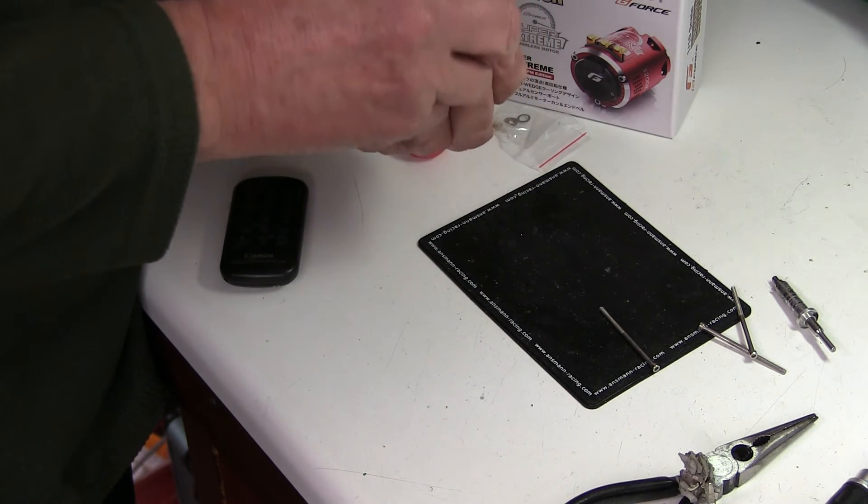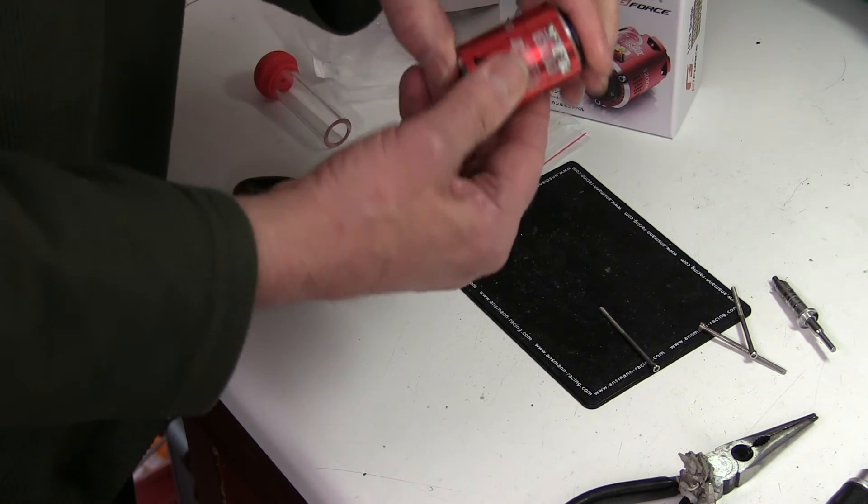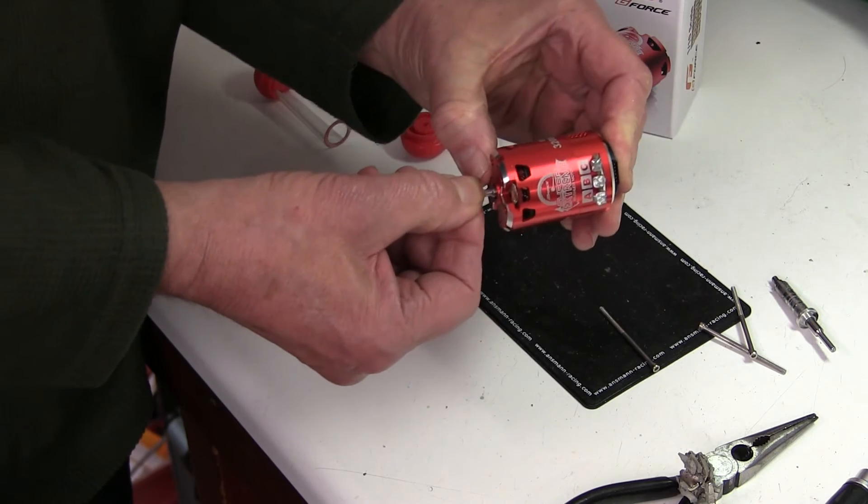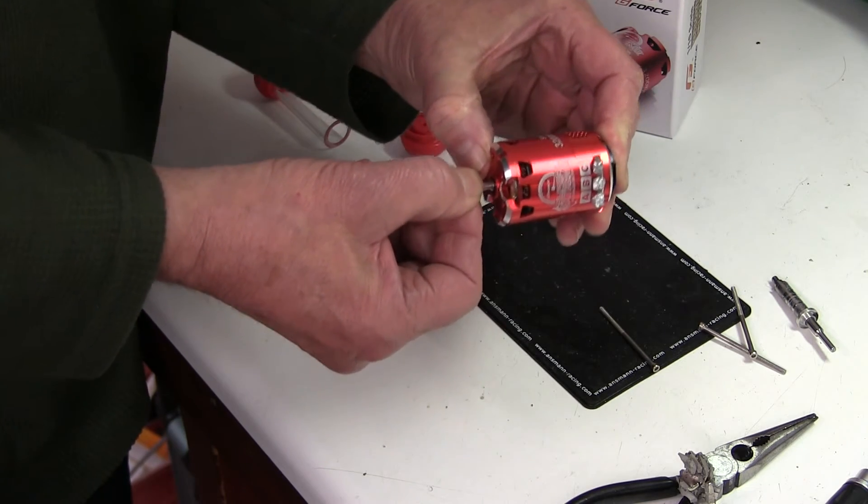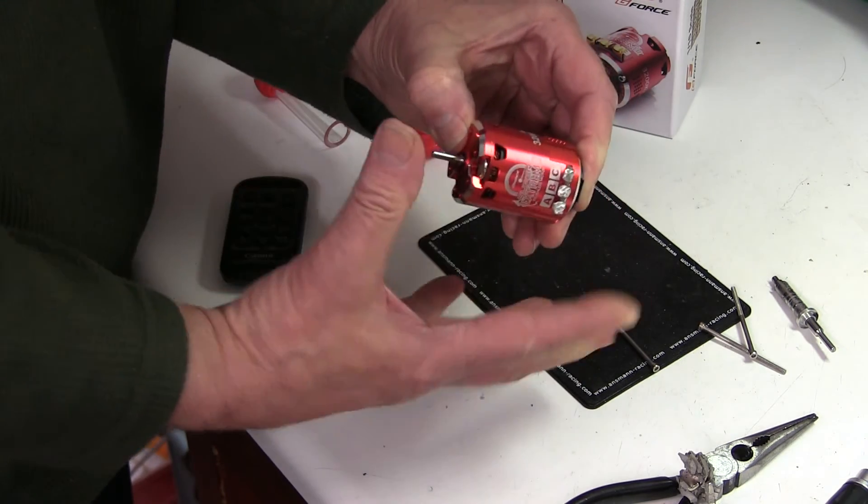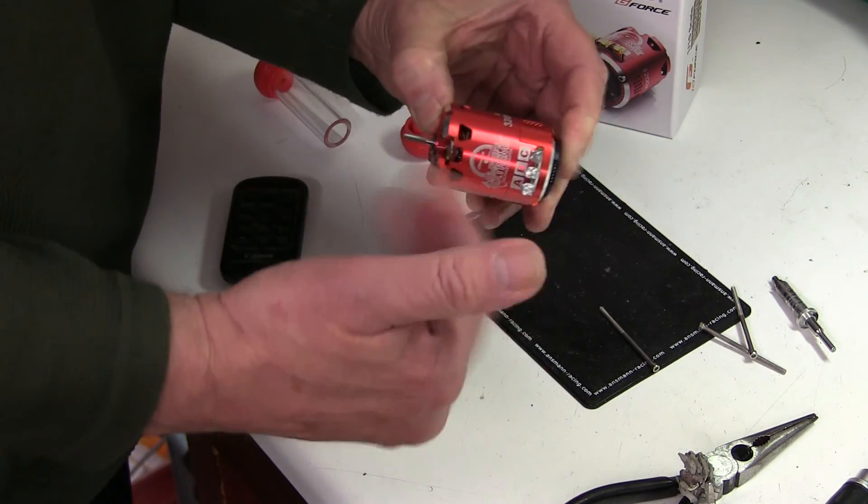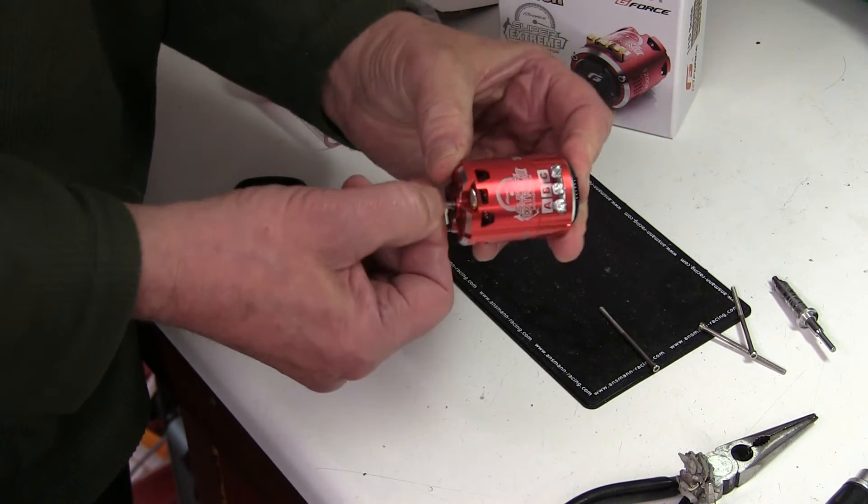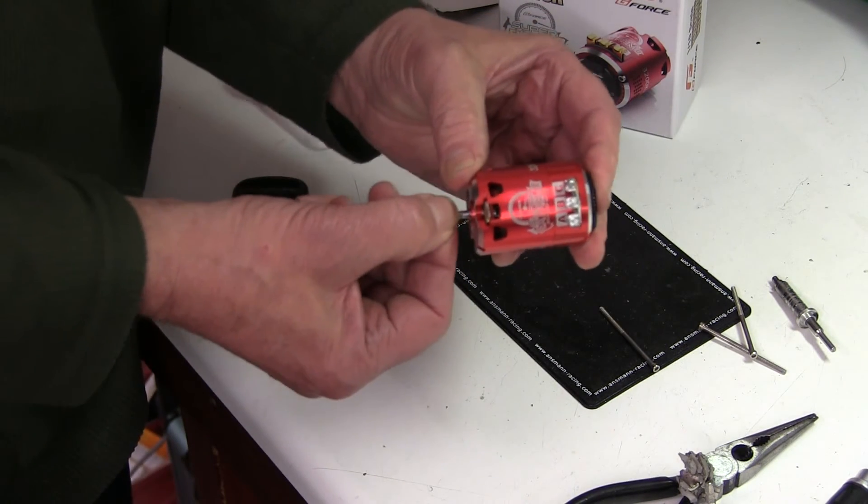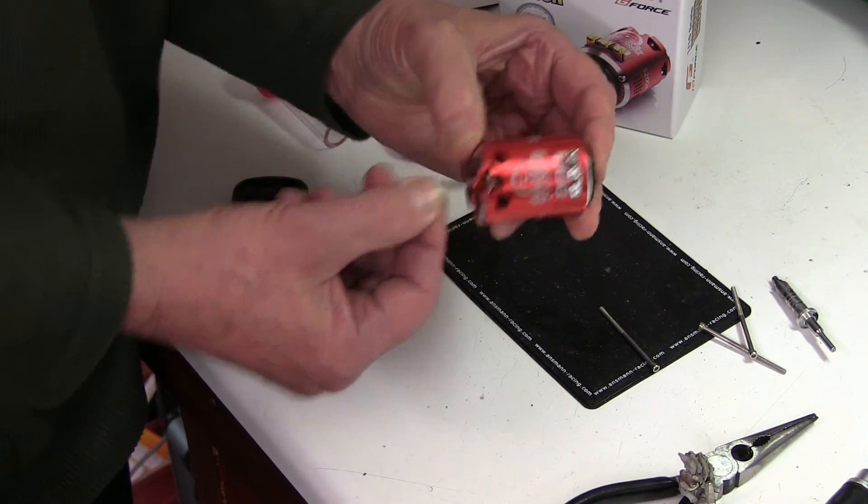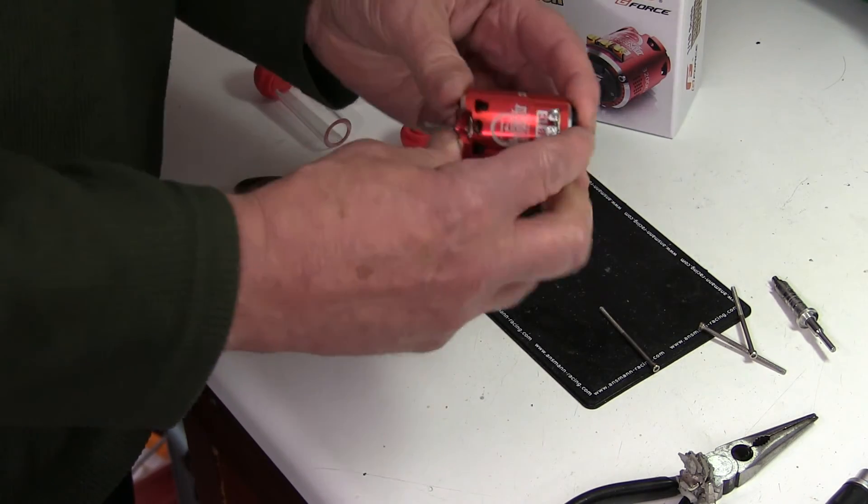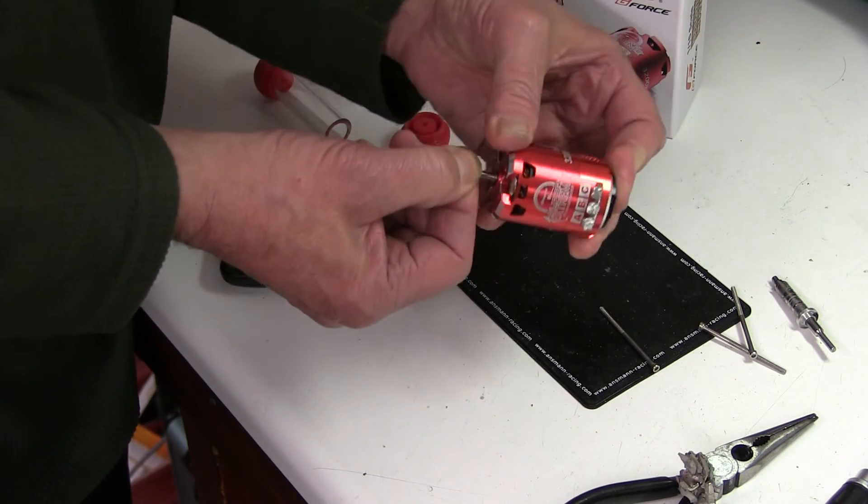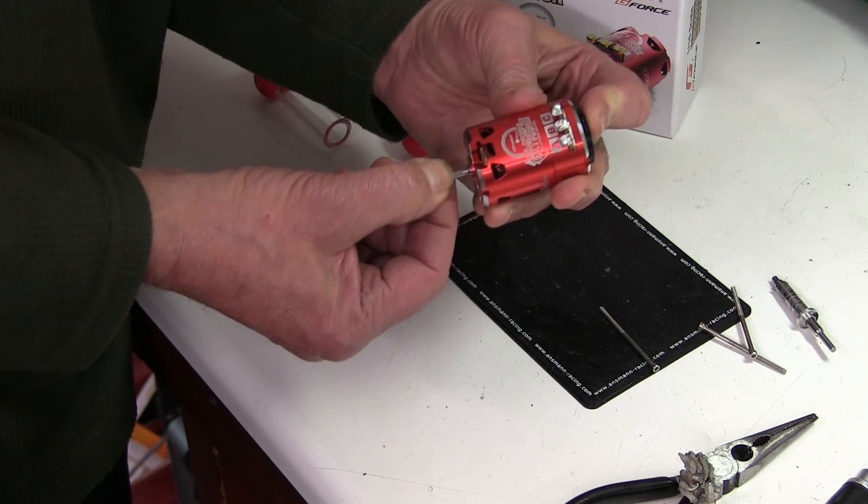It's just a matter of putting it together and checking it for end float. I mean, you want a tiny bit of end float because of the expansion, but not too much. That's too much because it can cause the timing to not be dead accurate if it's vibrating back and forwards. So it needs a tiny shim in there. But sometimes when you do the screws up it does tighten it up a bit. But that is actually too much movement there.